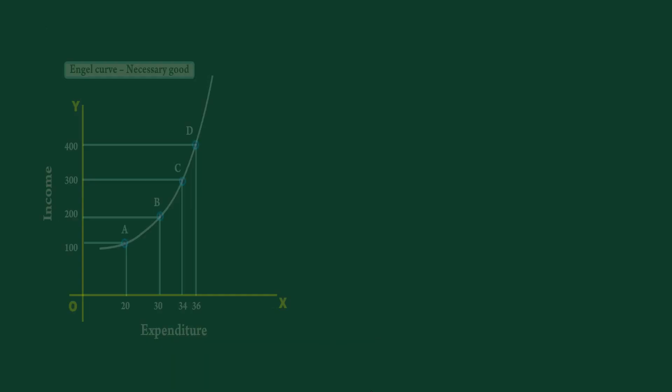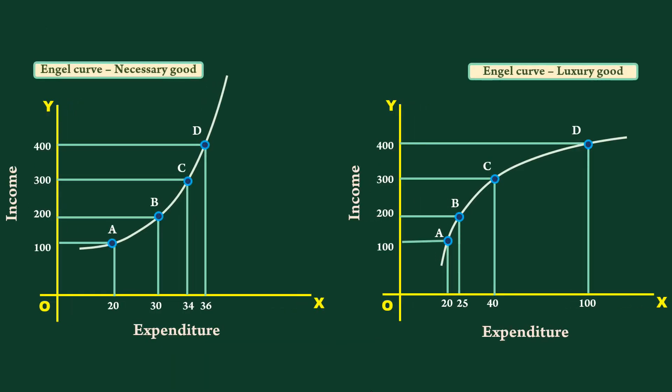Curves illustrating this tendency can be drawn for necessary goods and luxury goods. The curves so drawn use income and expenditure as variables.